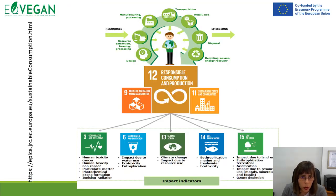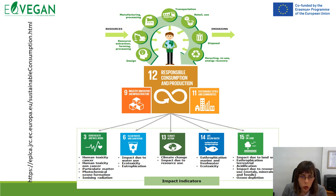When discussing food production and the food chain, we need to think about sustainable consumption and production — this is the 12th sustainable development goal. We also need to think about different industrial aspects, such as SDG 9: industry, innovation and infrastructure, and also sustainable cities and communities. Under responsible consumption and production, we need to think about resources and emissions.